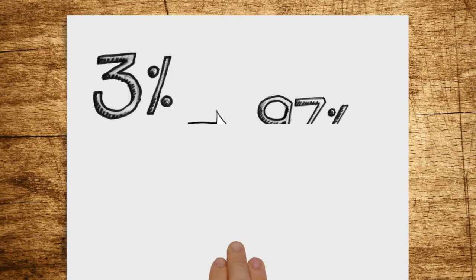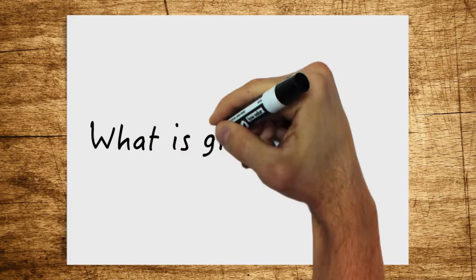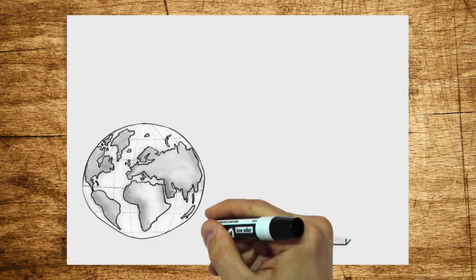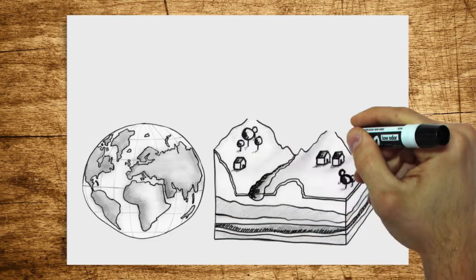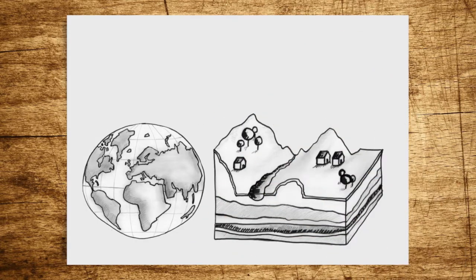What exactly is groundwater? In general, this term refers to water beneath the earth's surface. Groundwater is mainly formed by seepage of precipitation.